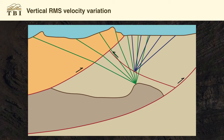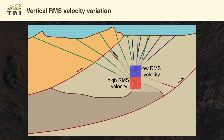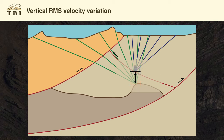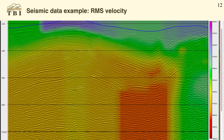If we use the Dix equation assuming horizontal reflectors and homogeneous overburden, we will get quite an anomalous interval velocity calculation. We have a low RMS velocity in the blue square, and below that a high RMS velocity. Assuming horizontal layers and homogeneous overburden, the cumulative average velocity down to the blue is some low number, then much higher down to the red, so the interval velocity resulting from that has to be significantly high in order for the cumulative average to increase that much. This results in an extreme interval velocity, and there are many cases where calculated interval velocities end up with these extreme values.